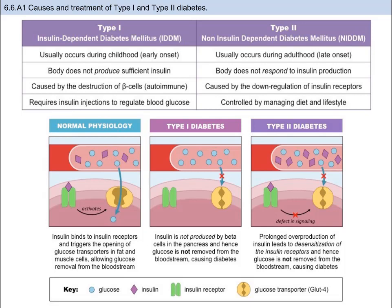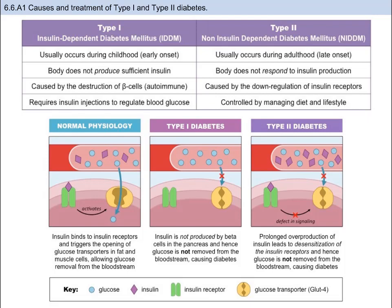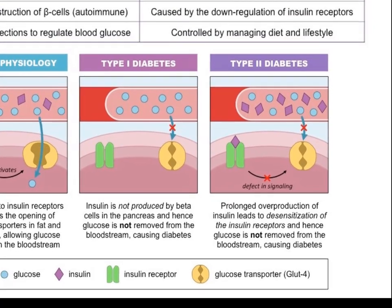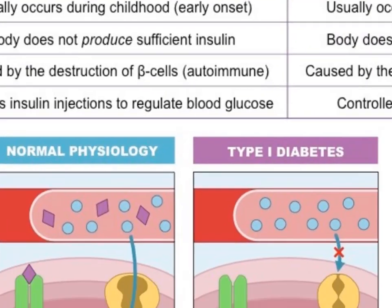There are two distinguishable types of diabetes called type 1 and type 2. They have different causes and different treatments. Type 1 diabetes is caused by the body not producing sufficient insulin and usually happens in childhood. The beta cells are recognized as foreign and then get destroyed by the immune system, so insulin can't be released. For a person with type 1 diabetes, they require regular insulin injections via shots or an implanted insulin pump to help regulate their blood glucose.